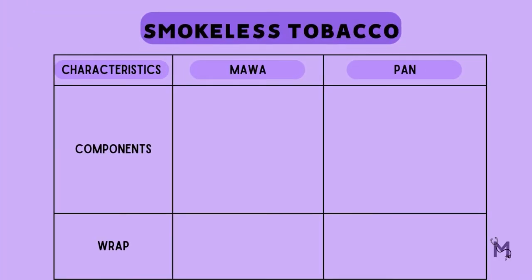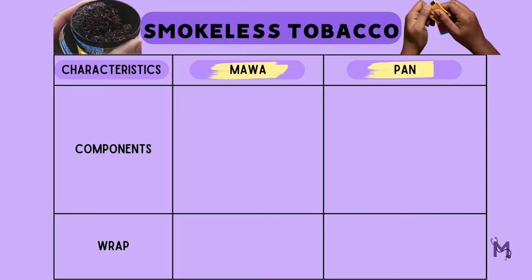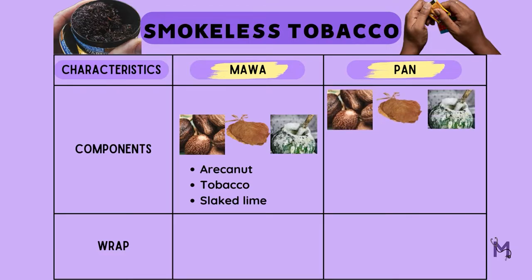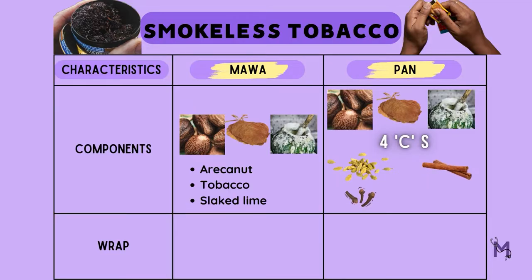After smoked tobacco, the second type is smokeless tobacco. The two most commonly used forms under this include mawa and paan. While mawa is primarily composed of areca nut, tobacco and slaked lime, paan in addition to these three also contains the four C's — cardamom, cinnamon, clove and coconut.